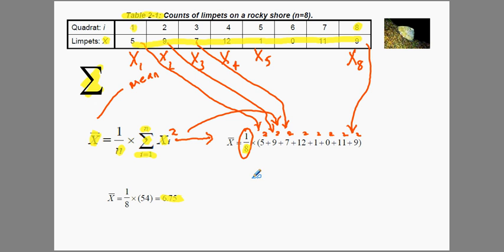So in this case we'd have 5 squared, 25. Plus 9 squared, 81. Plus 7 squared, 49. Plus 12 squared, 144. Plus 1 squared, which is 1. Plus 0 squared, which is 0. Plus 11 squared, which is 121. Plus 9 squared again, which is another 81. And we would add up all of those.